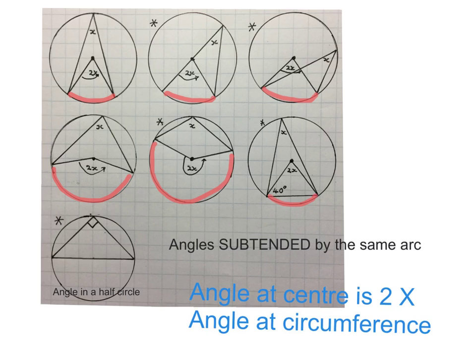You can just Tipp-Ex out that line, and still we have angle at the center is twice the angle at the circumference. They're both subtended by this arc.